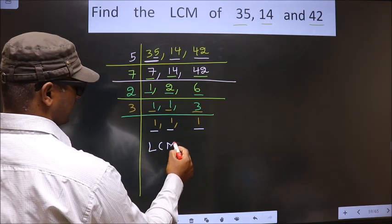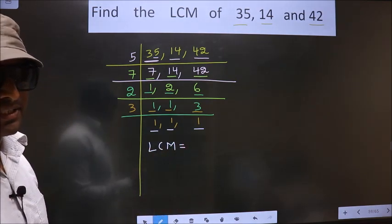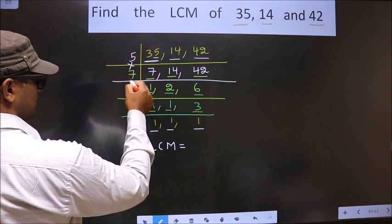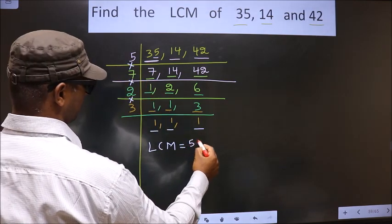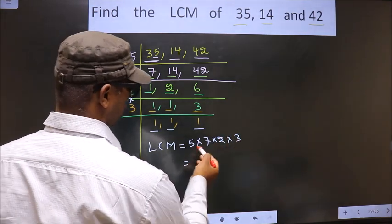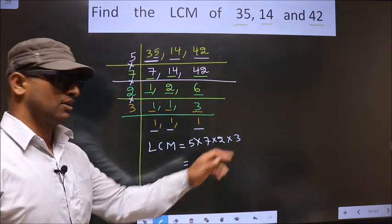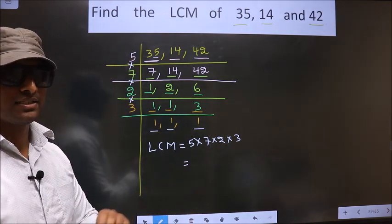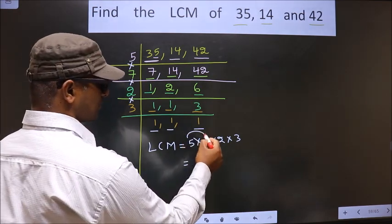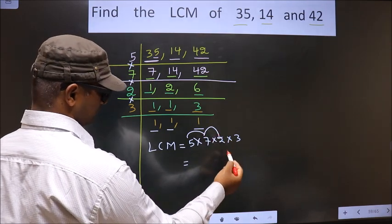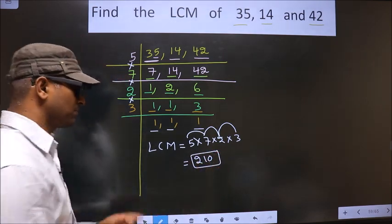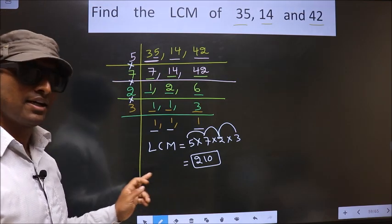So now our LCM is, LCM is the product of these numbers. That is 5 into 7 into 2 into 3. You multiply all these numbers. Whatever number you get, that is your LCM. So let us multiply. That is 5 into 7, 35 into 2, 70 into 3, 210. So this is our LCM. Am I clear?